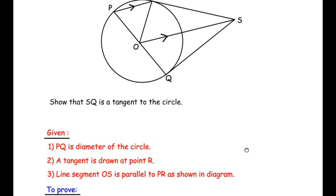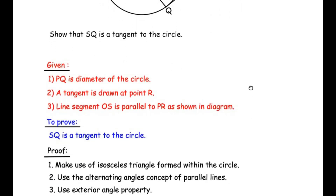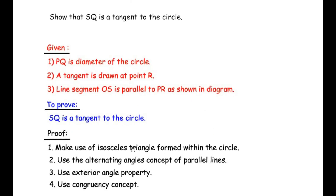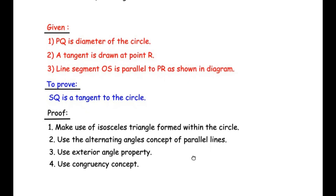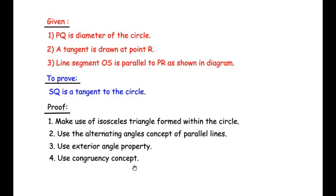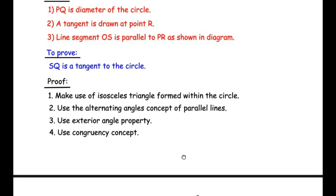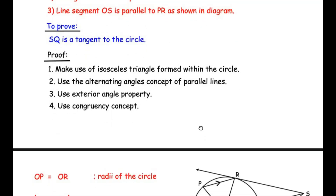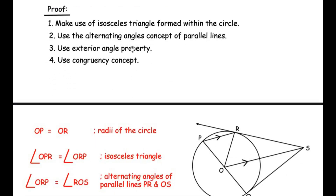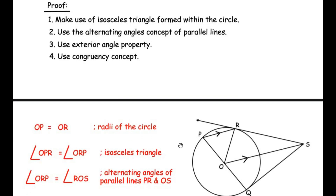To prove this, we are going to make use of some concepts. We will use the isosceles triangle formed within a circle, the alternate angles concept of parallel lines, the exterior angle property, and the congruency concept. Let us see how we can connect these concepts to solve the example.